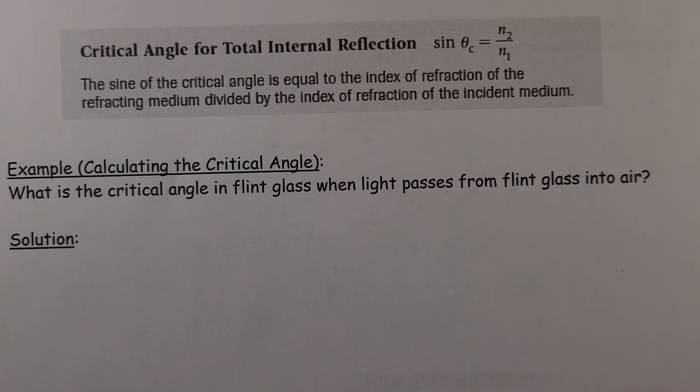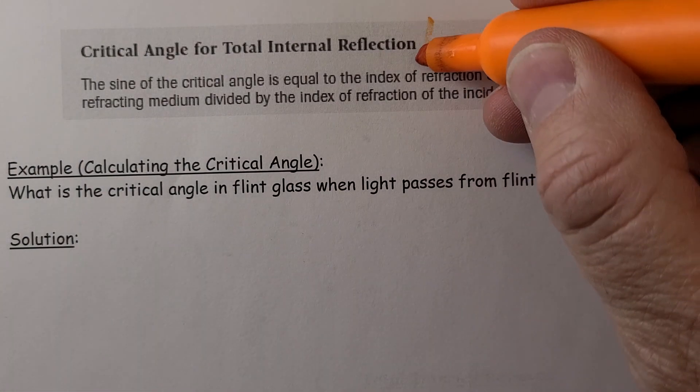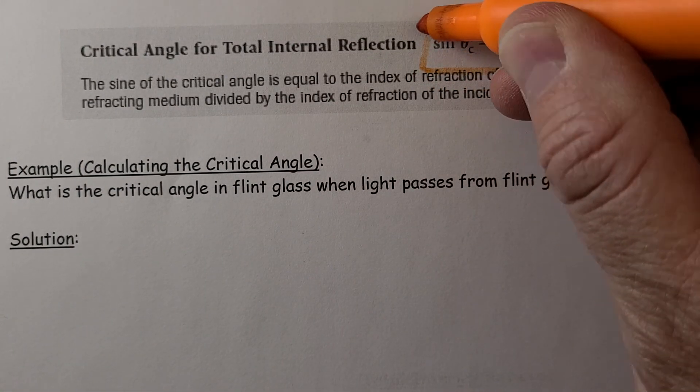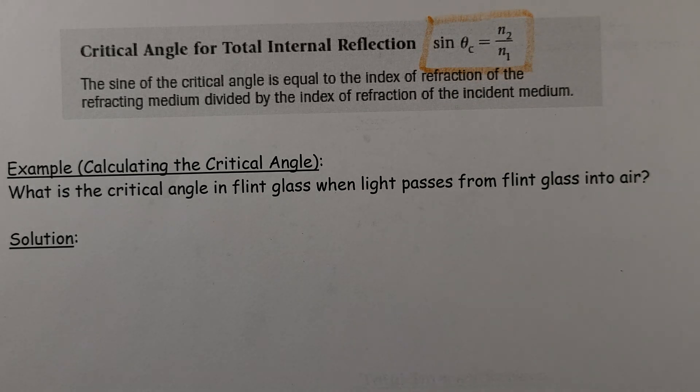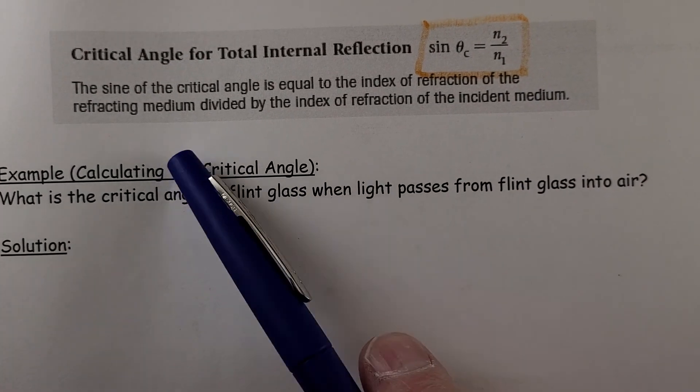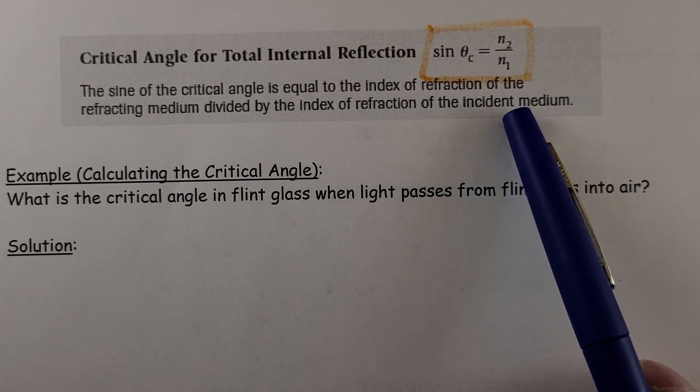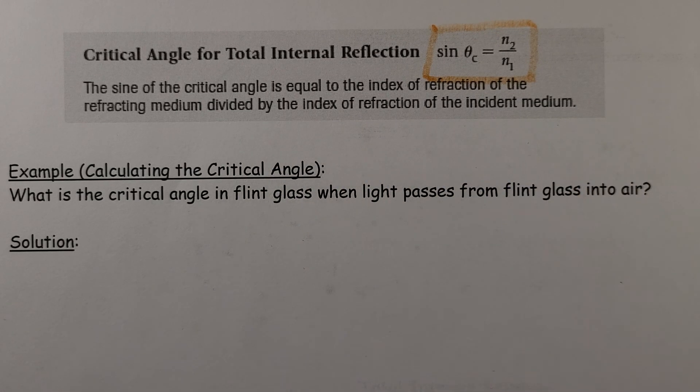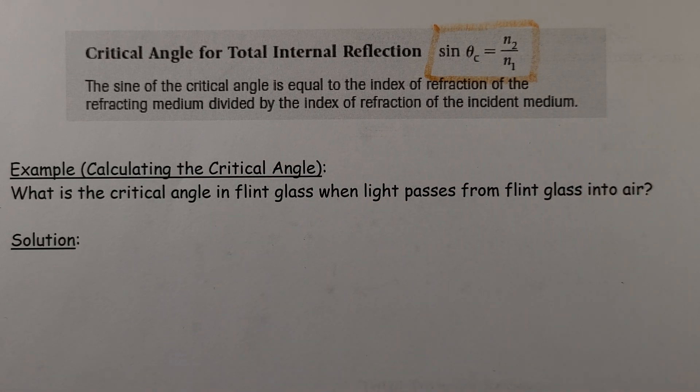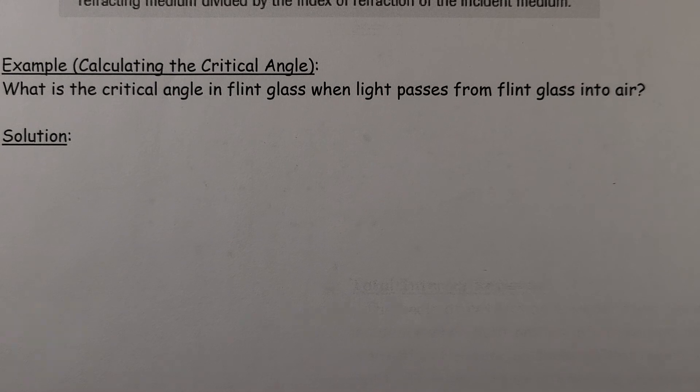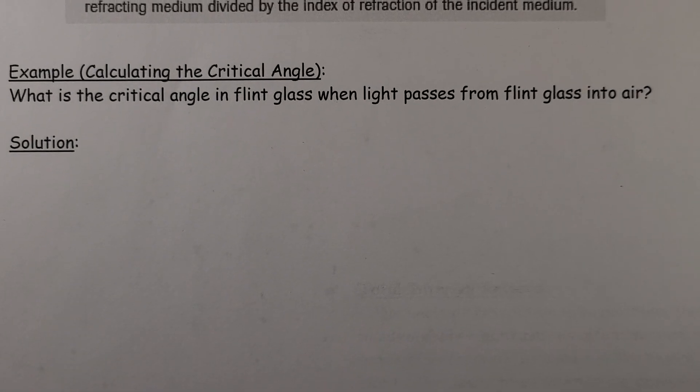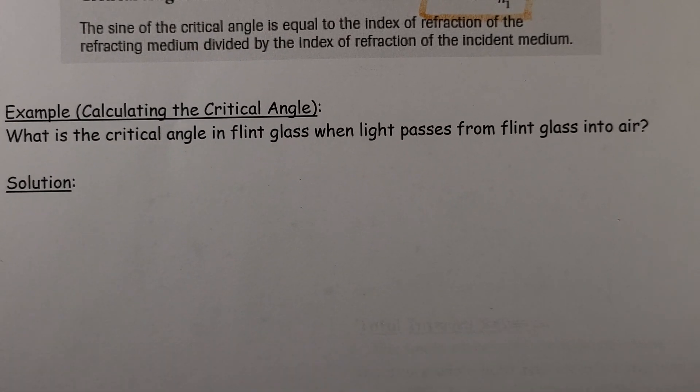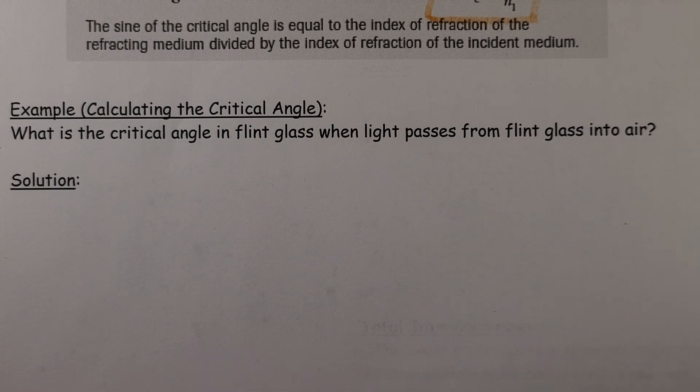Look at that critical angle for total internal reflection: sine theta c, the critical angle, the angle that results in a refracted ray of 90. Sine of the critical angle is equal to the index of refraction of the refracting media divided by the index of refraction of the incident media. Here's an example here. We'll save that for the next video though since we're almost at the over the 10 minute mark. We'll see you in video three.